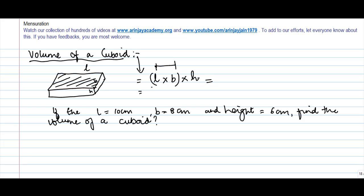So we know that the volume of the cuboid is length which is 10 centimeter into breadth 8 centimeter into height 6 centimeter. So 10 into 8 into 6 will give me what? 10 into 8 will give me 80. 80 into 6 will give me 480 centimeter.